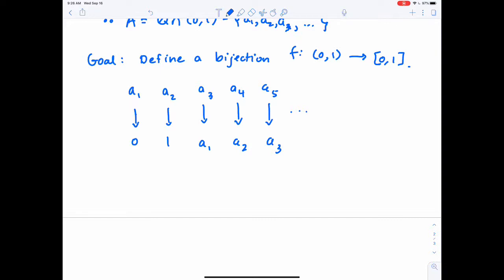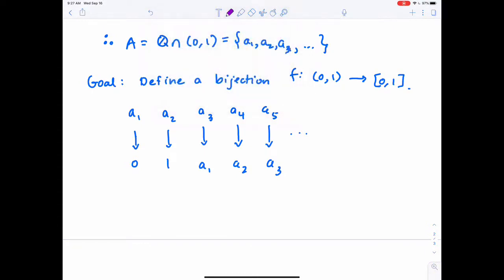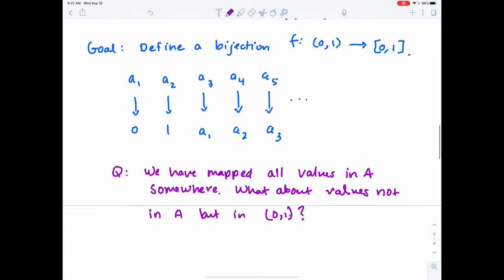Now, what I've managed to do so far is I've only defined my map on the values for the set, for that countable subset A in my domain. But what about all the numbers in the interval (0,1) that weren't listed in that enumeration? Where do those go? So we have mapped all values in A somewhere. What about values not in A, but in (0,1)? Where should they go?